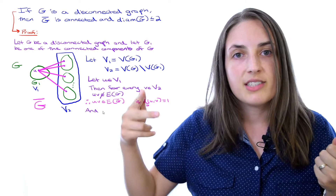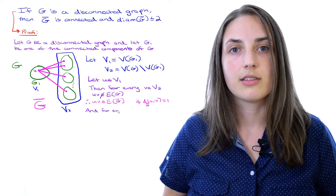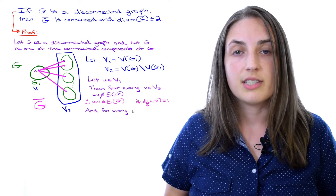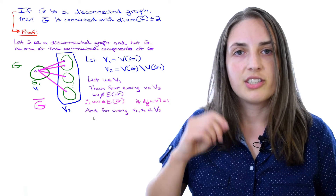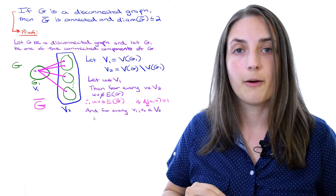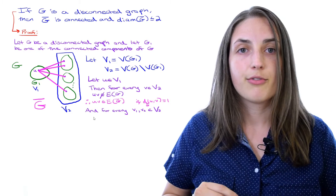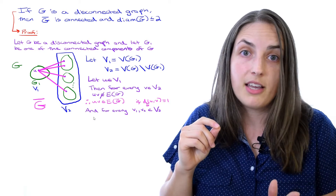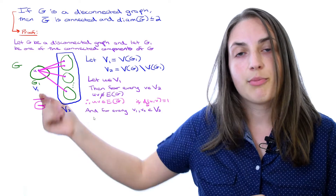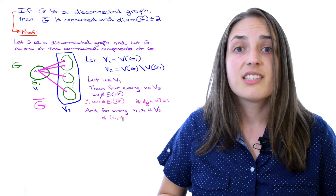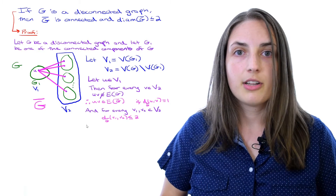But what about vertices that could both belong to the same side? Let's take two vertices from the big set V2. They may have belonged to different green blobs in the original graph, but they both have edges out to my vertex U and back, so they have distance at most two in the complement. It could be one, but definitely it's at most two.